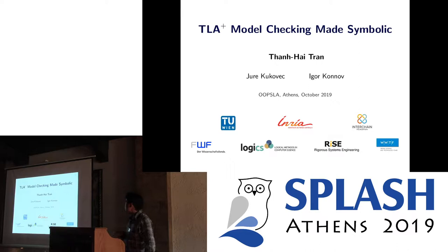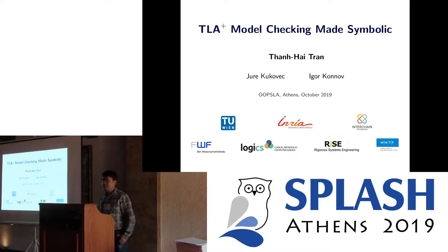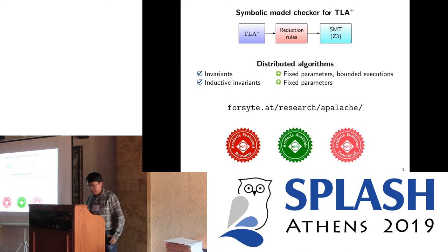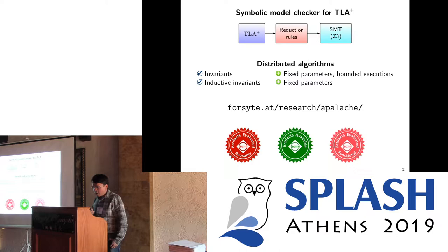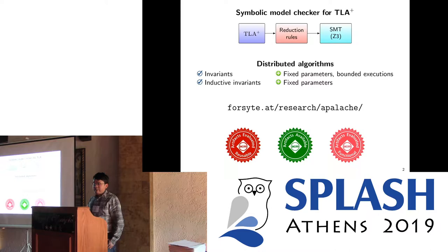This is joint work with my colleague Jure Kukovek at Tujuvin and with my supervisor Igor Konov at NREA and now at Interchain Foundation. In this paper we develop a symbolic model checker for the language TLA+. Our model checker uses the SMT software Z3 as a backend engine because Z3 is a powerful tool for automatic reasoning. However, TLA+ and Z3 have different levels of expressiveness.